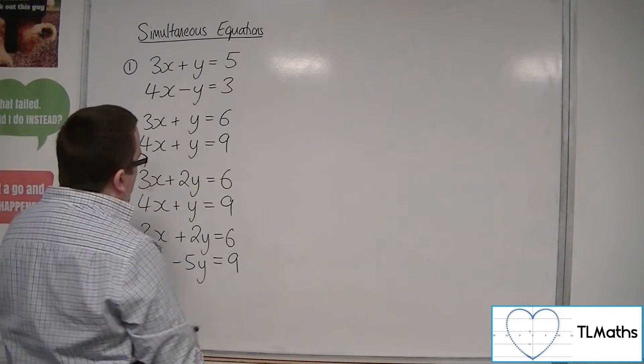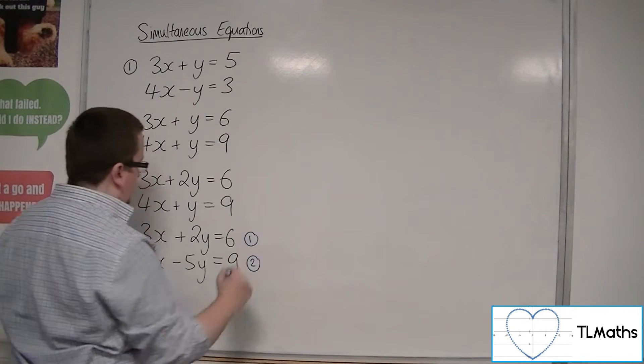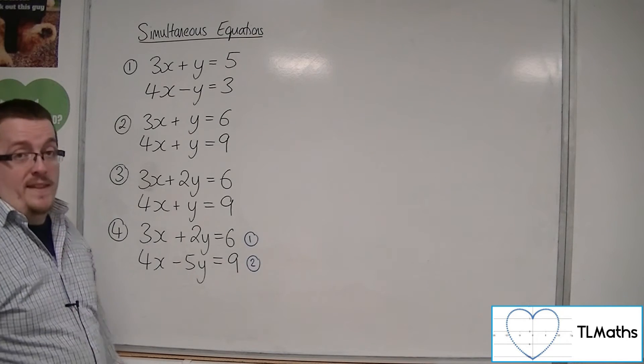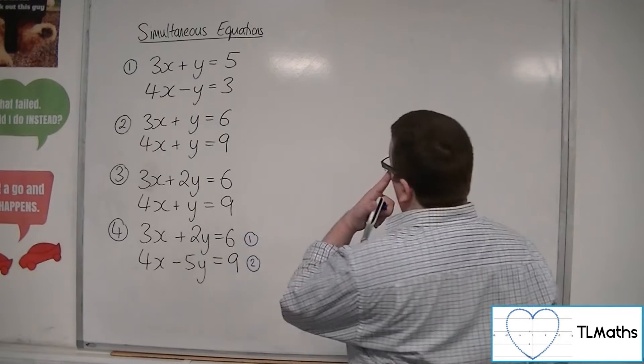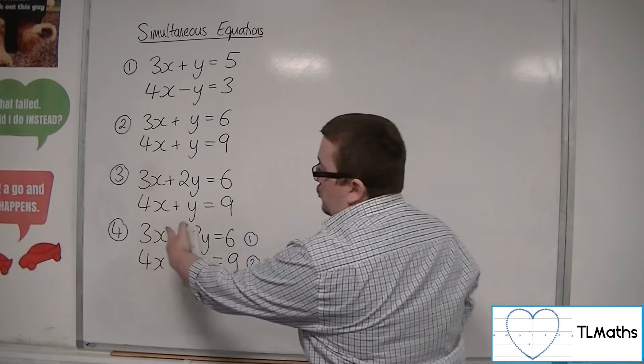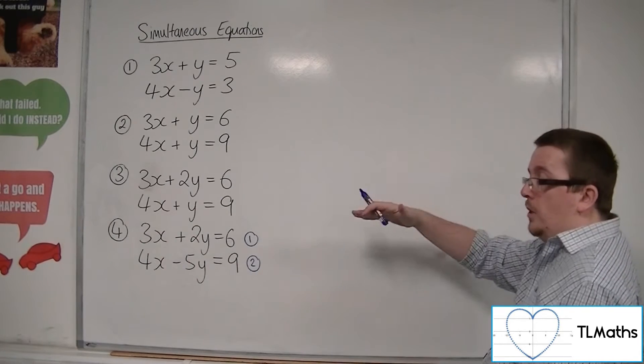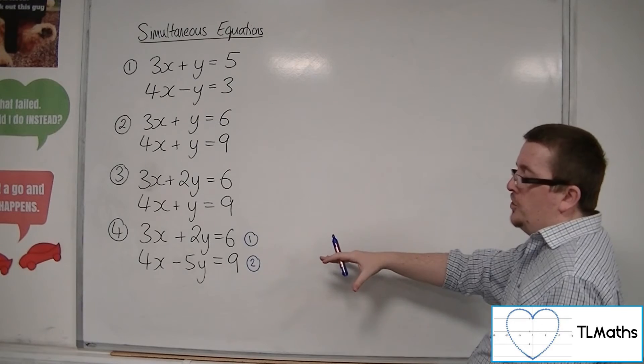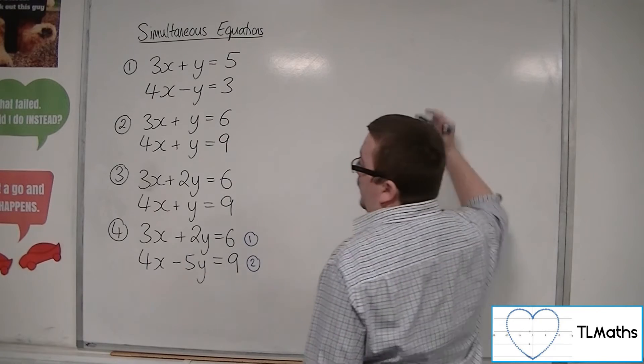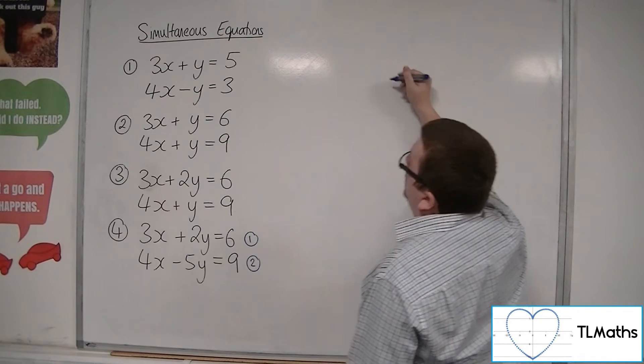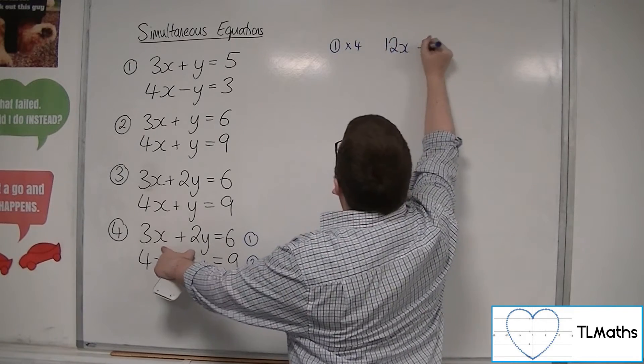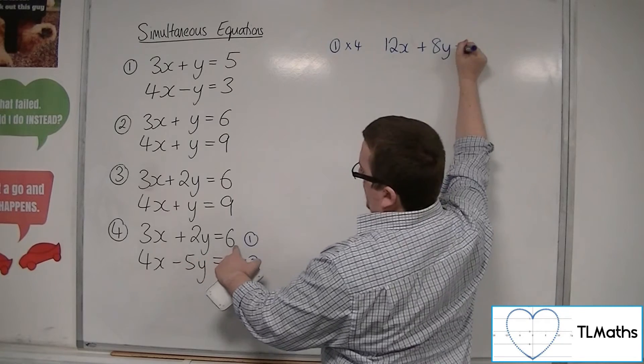OK, so finally, number 4, equation 1 and equation 2. I've been eliminating the y's for the first 3, so let's eliminate the x's this time. Change it up a bit. So in order to eliminate the x's, I need to make sure I've got the same amount of x's in equation 1 and the same amount of x's in equation 2. So if I multiply equation 1 by 4 and equation 2 by 3, I'll end up with 12x in both. So equation 1 times by 4, we're going to get 12x plus 8y is equal to 24. Let's call that equation 3.